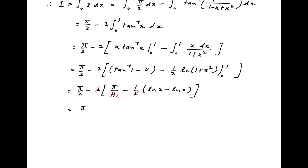This is equal to pi upon 2 minus 2 times, in brackets, pi upon 4 minus half of ln 2 minus ln 1. This simplifies to pi upon 2 minus pi upon 2 plus ln of 2, which is equal to ln of 2, which is the required answer of the given integral.